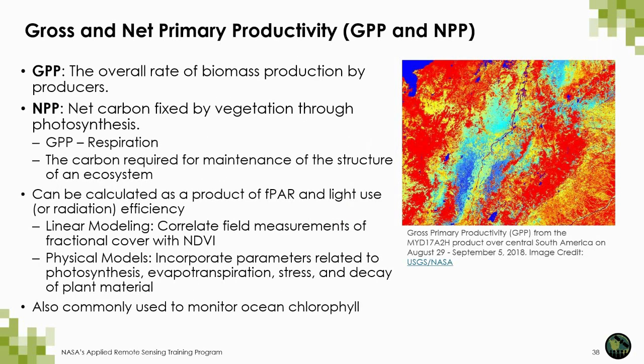Primary production is the rate of organic biomass growth or accumulation by plants. It is commonly split into two components: gross primary productivity and net primary productivity, or GPP and NPP. GPP is the overall rate of biomass production by producers, whereas NPP is the remaining fraction of biomass produced after accounting for energy loss due to cellular respiration and maintenance of plant tissue — so NPP equals GPP minus respiration. This is an important component of the global carbon budget and is also used as an indicator of ecosystem function.